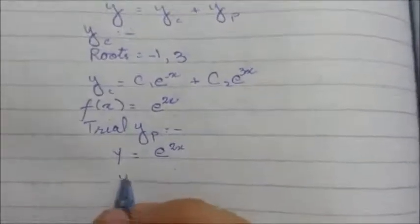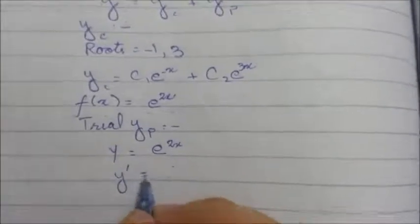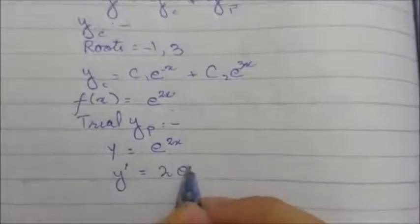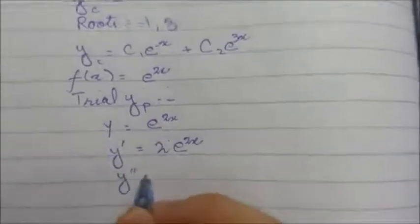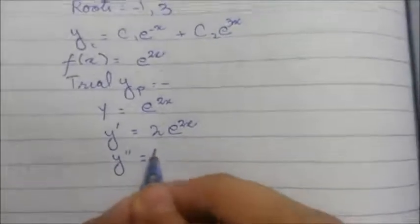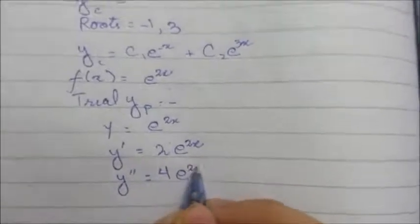We will take the first derivative of it, which will be 2e^(2x). And the second derivative will be 4e^(2x).